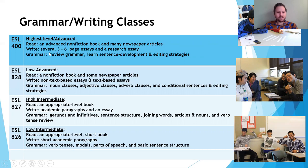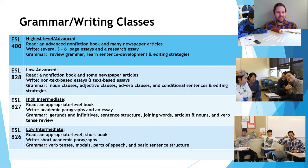Our highest level grammar and writing class is ESL 400. In this class, you will read an advanced nonfiction book and many newspaper articles, as the reading increases with every level. You will write several three to six page essays and a research essay. What makes this level very different is that you are doing your own independent research, and the teacher will walk you through the research process. The grammar includes a brief review along with sentence development and editing strategies. You do not need to start at the lowest level — you can start at any level that is right for you.